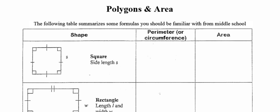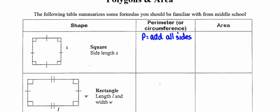Remember that perimeter is really the distance around the outside of a figure. For any polygon, I can find the perimeter by adding the lengths of each of its sides. So for any polygon, the perimeter can always be found by adding the length of each side.